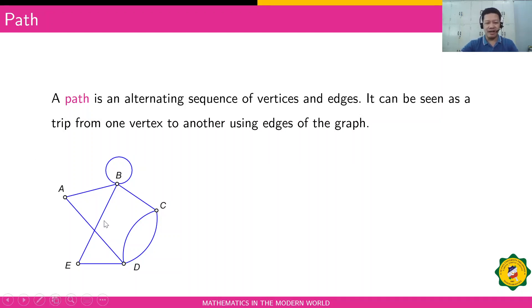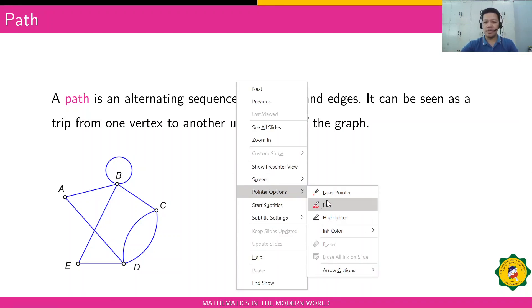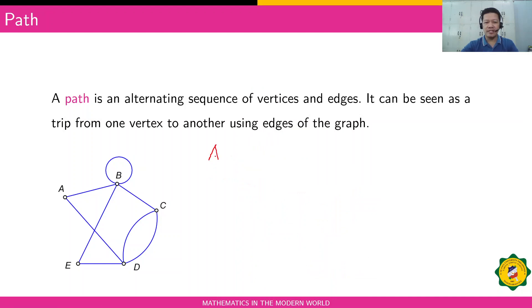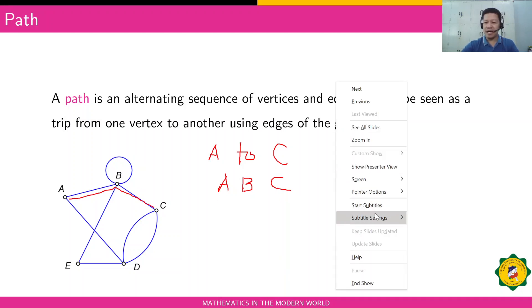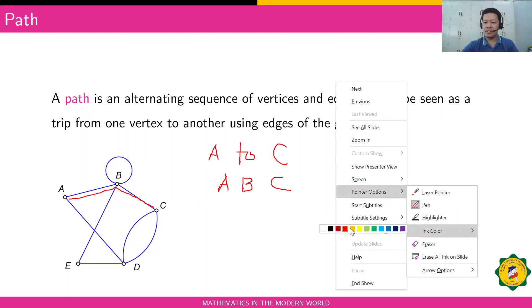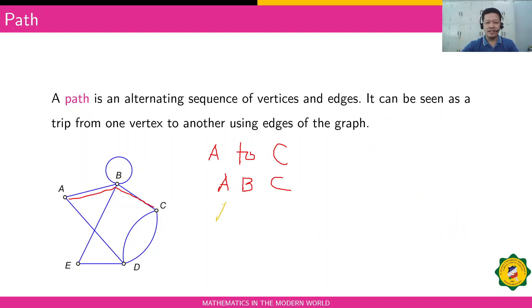Let's say you have this graph. We're going to make a path from vertex A to vertex C. We can start with vertex A, proceed to vertex B, and go to C — that's one path from A to C. You can also have another path: start with A, go to D, and then arrive at C.